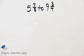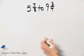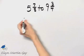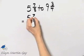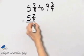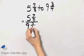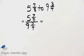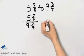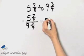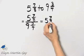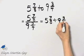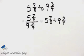We'd like to write this ratio as a fraction in simplest form. First, let's write it as a fraction: 5 and 7 eighths to 9 and 3 fourths as a fraction is 5 and 7 eighths over 9 and 3 fourths. Now let's talk about what this means — remember the fraction bar does mean division, so this means 5 and 7 eighths divided by 9 and 3 fourths. Let's simply work this out then.